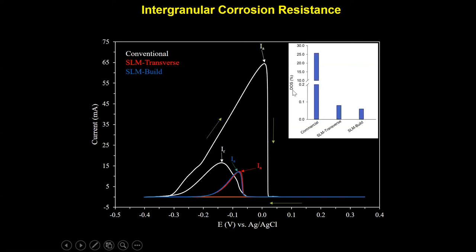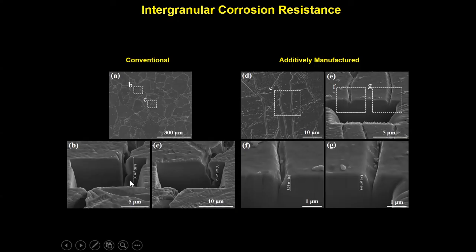It shows the degree of sensitization of the material or DOS based on the different samples. The conventional material has a DOS value of 25%, but the additively manufactured sample in both transverse and building plate directions has a DOS value below 0.1%, which is much less than the DOS value for the conventional material, showing the very high resistance of the additively manufactured sample to intergranular corrosion.